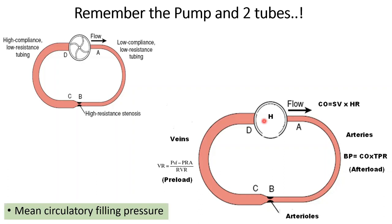Venous return can be referred to as preload. As opposed to afterload — the pressure against which the heart contracts — preload is the amount of blood that comes back to the heart, which the heart needs to deal with and push forwards.